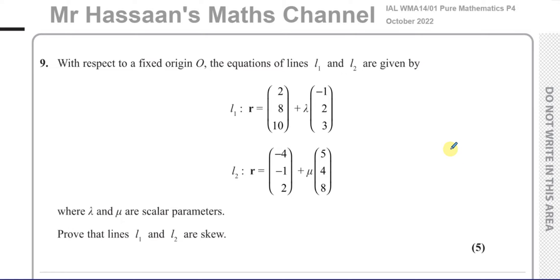This paper is a bit different from what I normally see. There's actually 11 questions, which is quite a lot for P4. However, some of them are very short, like this one. It says: with respect to a fixed origin O, the equations of lines L1 and L2 are given by these two vector equations of straight lines.